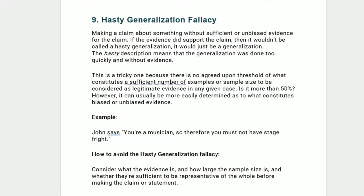Nine, hasty generalization fallacy — making a claim about something without sufficient or unbiased evidence. If the evidence did support the claim, it wouldn't be called a hasty generalization; it would just be a generalization. The hasty description means the generalization was done too quickly and without evidence. There is no agreed-upon threshold of what constitutes a sufficient sample size, but it can usually be more easily determined what constitutes biased or unbiased evidence. Example: 'You're a musician, so you must not have stage fright.'